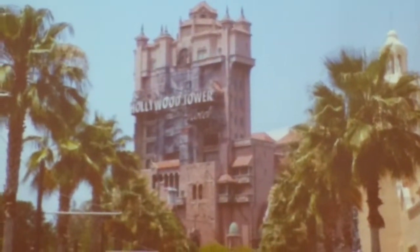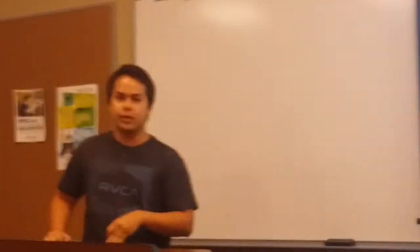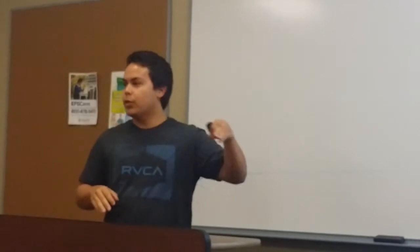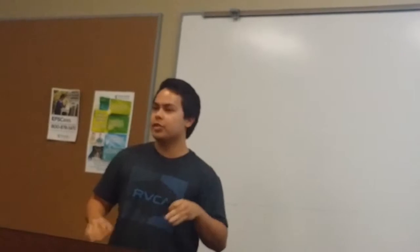Hollywood Tower of Terror is hands down one of the most visited attractions at MGM. On this ride you go through a lobby filled with French Renaissance couches and movie props, then through the library and into the Twilight Zone. Each ride is different — every time you go on it, the sequence may be in a different order, so it's always unique.